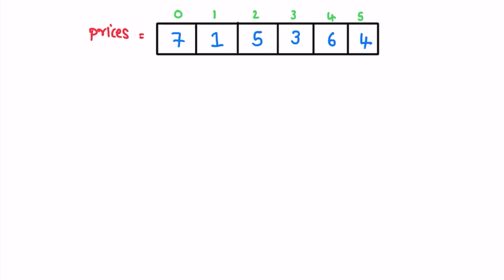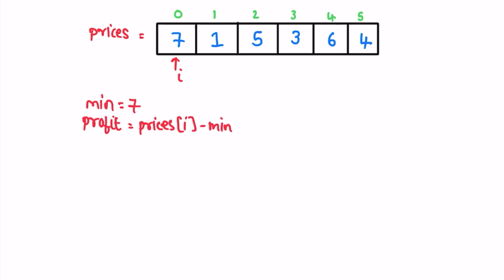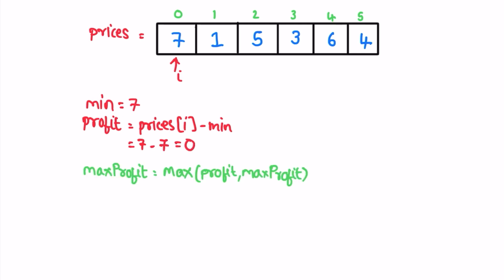We start with the first element and process the array until we reach the last element. I'll be pointing at the first element, and in each iteration we find the minimum value. I declare a variable initially set to 2^31 — the maximum possible value. We check if the current element is less than minimum; yes, 7 is less than the initial maximum so 7 becomes the minimum. The current profit is 7 minus 7, which is 0, and max profit starts at 0 so it remains 0.